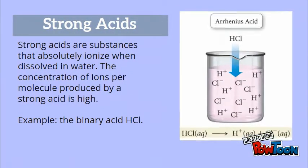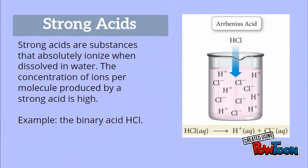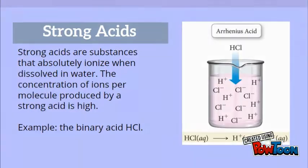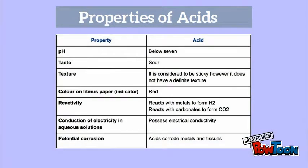Strong acids are substances that absolutely ionize when dissolved in water. The concentration of ions per molecule produced by a strong acid is high. Examples would include the binary acid HCl and the oxal acid H2SO4, which is found in car batteries. The following chart depicts the most common properties of acids.